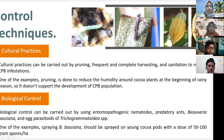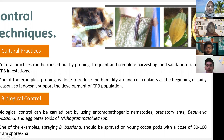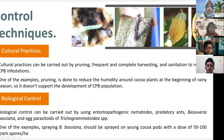Control techniques for CPB include cultural practices and biological control. Cultural practices involve pruning, frequent and complete harvesting, and sanitation to reduce CPB infection. Pruning is done to reduce humidity around cocoa plants at the beginning of the rainy season so it does not support CPB population development. Biological control uses entomopathogenic nematodes, predators, Beauveria bassiana, and the egg parasitoid Trichogramma sp. For example, Beauveria bassiana should be sprayed on young cocoa pods at a dose of 15 to 100 grams per hectare.